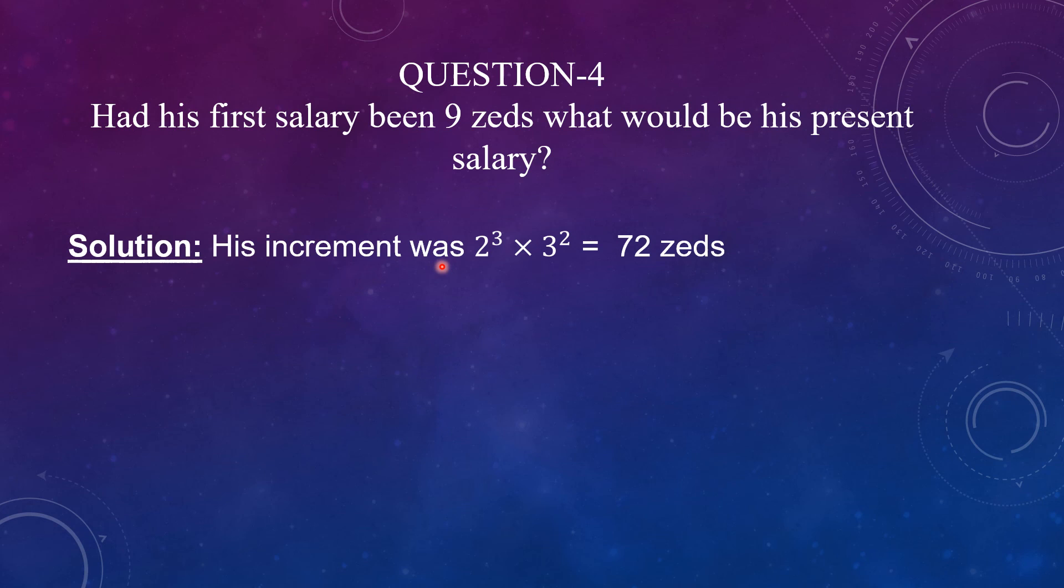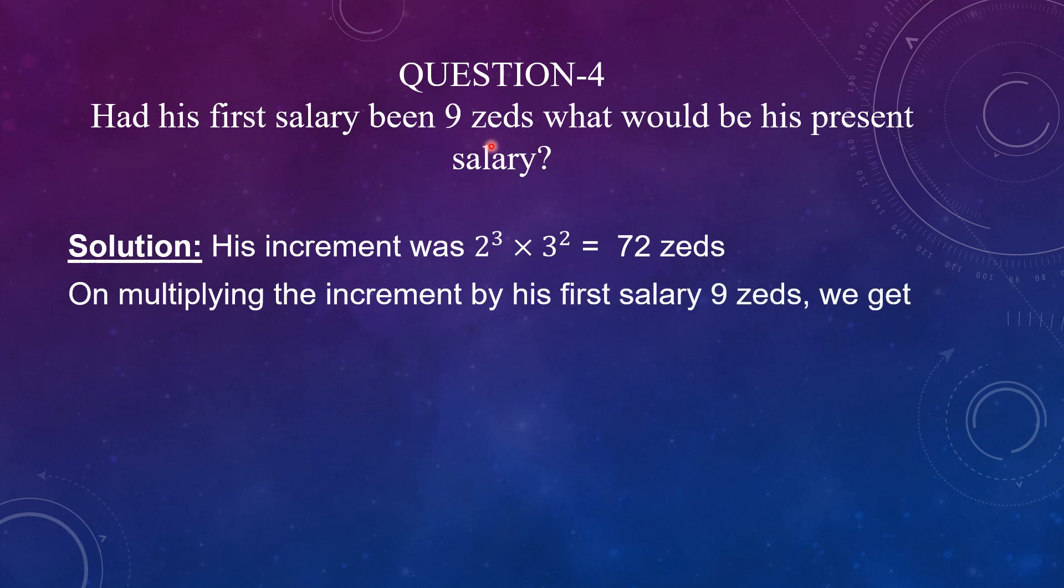His increment was 2 raised to the power 3 and 3 raised to the power 2. As you all know, it was equal to 72 zeds. So, we can multiply this 72 zeds by 9 zeds. That is present salary. On multiplying the increment by his first salary, that is 9 zeds, we get 2 raised to the power 3 into 3 raised to the power 2 into 9. That is, equal to 648 zeds.